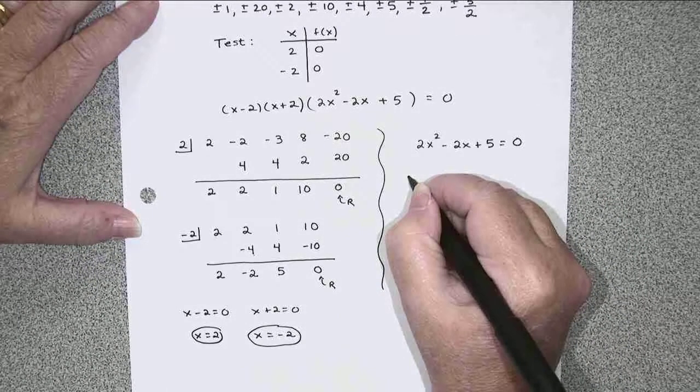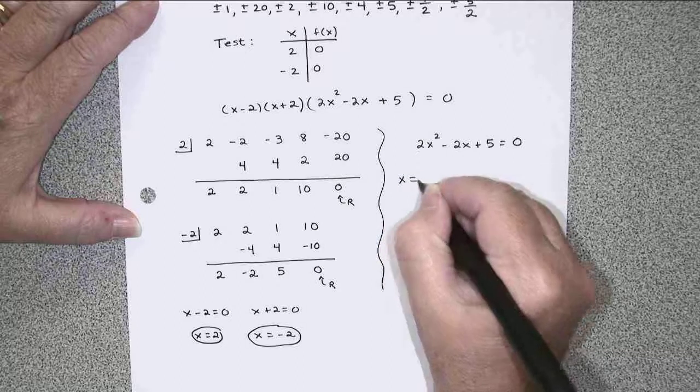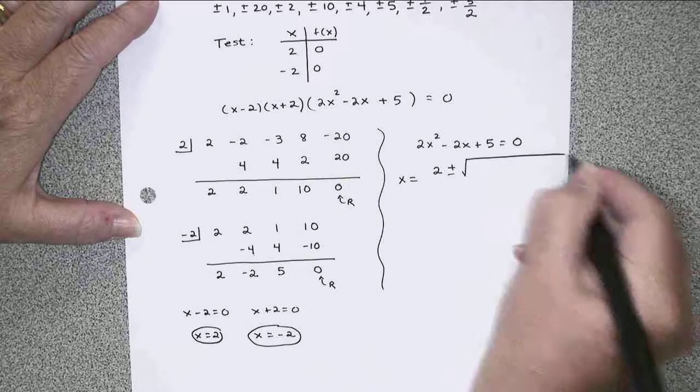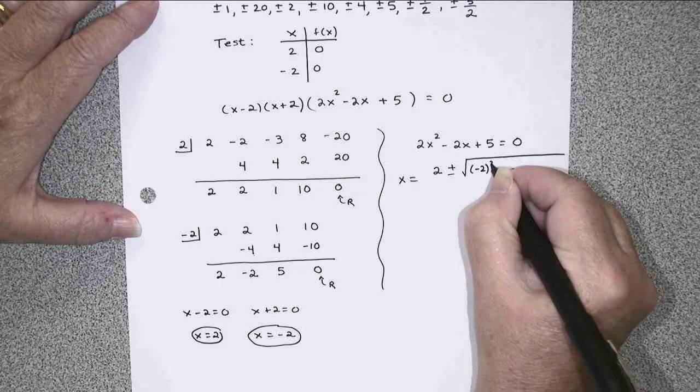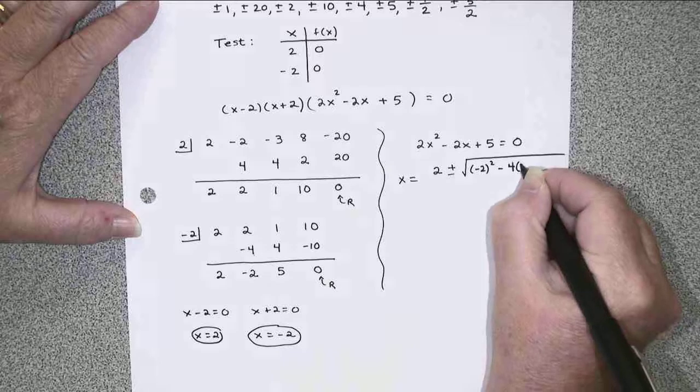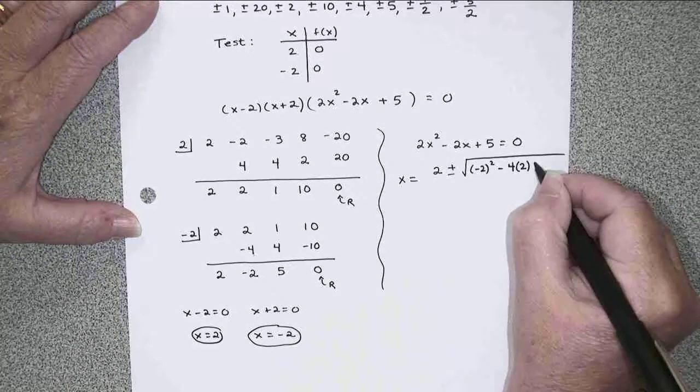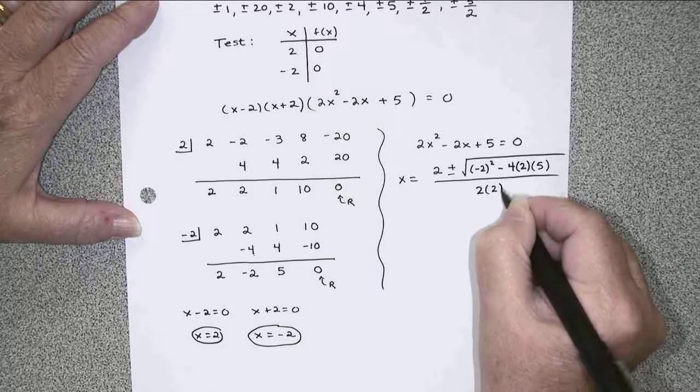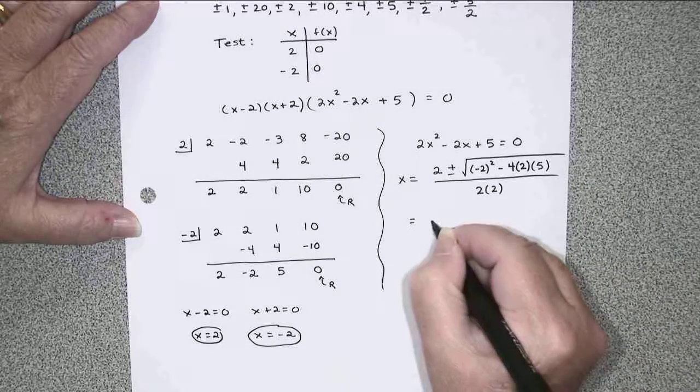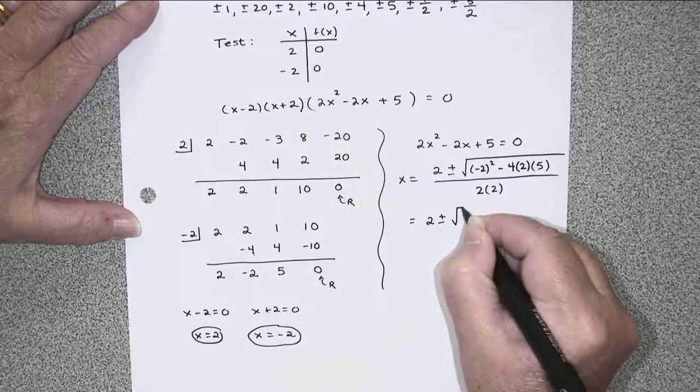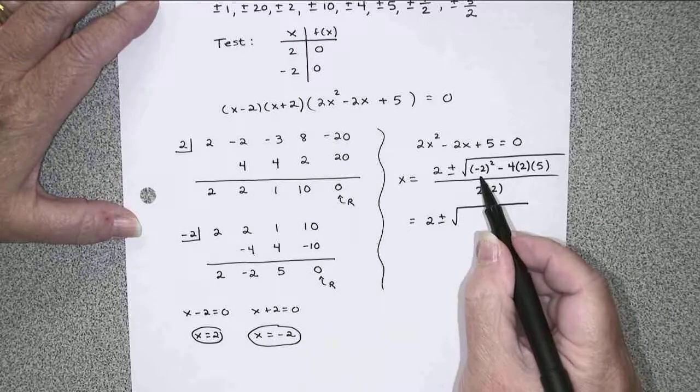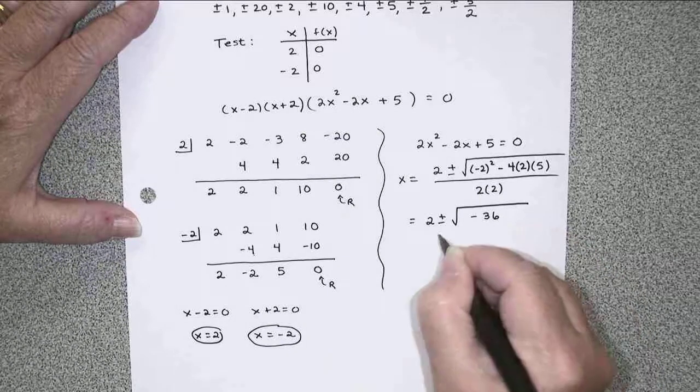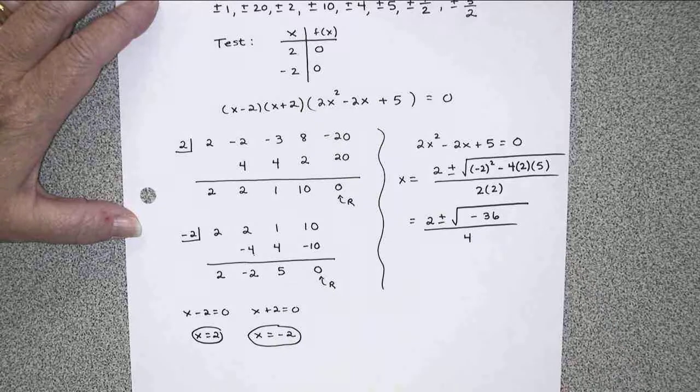The opposite of negative 2 would be 2 plus or minus the square root of negative 2 squared minus 4 times a, which is 2, times c, which is 5, over 2 times a. Let's see. Under my radical, I've got 4 minus 40 would be negative 36. 4 at the bottom. And with the negative, that's not just 6, it's 6i.